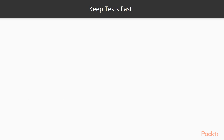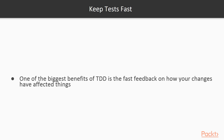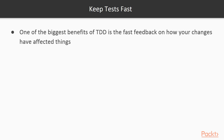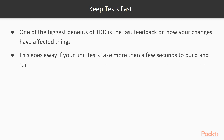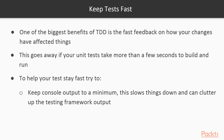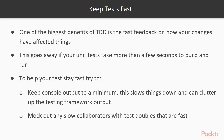Keep your unit tests building and running fast. One of the biggest benefits of TDD is the fast feedback on how your changes have affected things. You lose this if the build and/or execution of your unit tests is taking a long time, i.e. more than a few seconds. To help your tests stay fast, try to keep console output to a minimum or eliminate it altogether. This output just slows down the test and clutters up the test results. Mock out any slow collaborators with test doubles that are fast, such as network connections and databases.